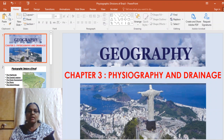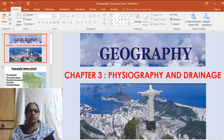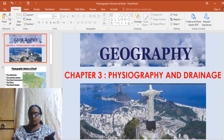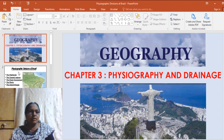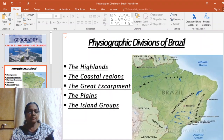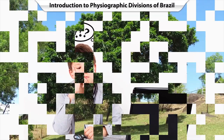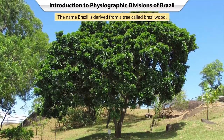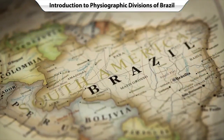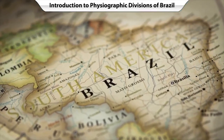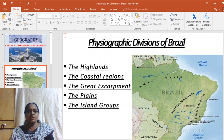Global warming also causes an increase in sea water levels. Now we are going to go into the physiographic divisions of Brazil, just as we had done in the previous lesson under India. Do you know how Brazil came to be known as Brazil? The name Brazil comes from a tree named Brazil wood.